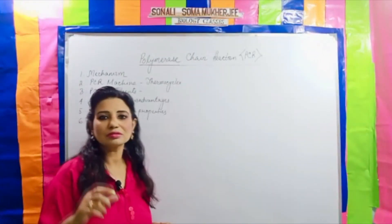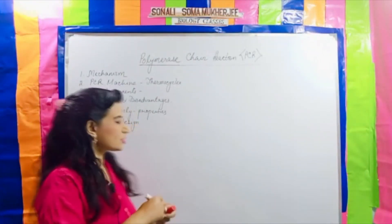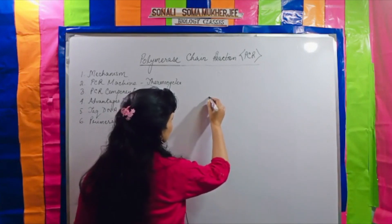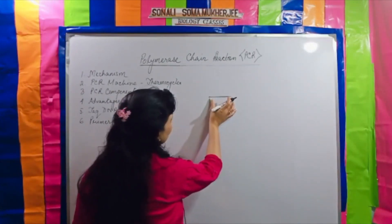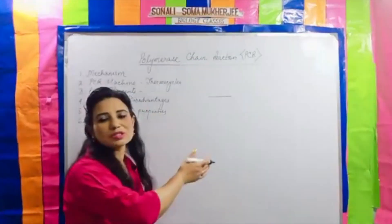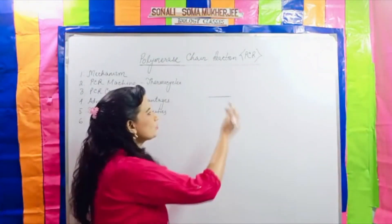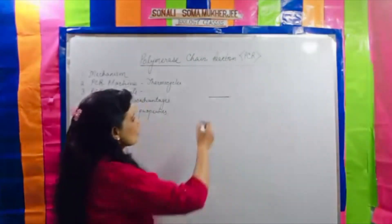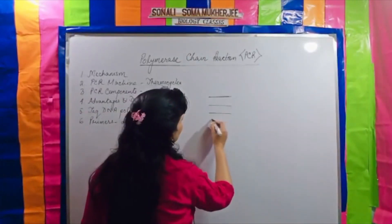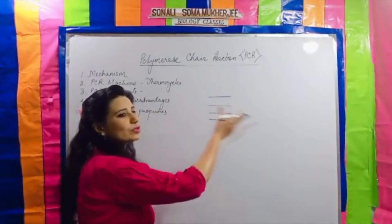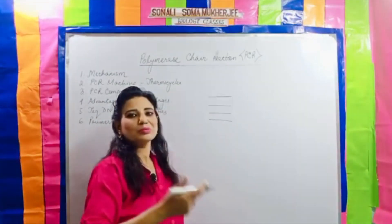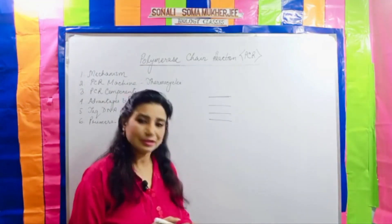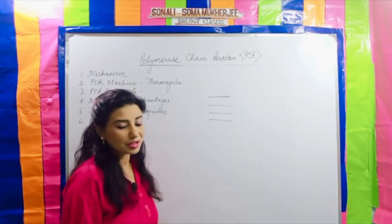Amplification of the gene is very important. If we have a very small gene fragment and do not make multiple copies of it, we will not be able to study it. That is why the amplification process takes place — to get multiple copies. In the first step only two copies are made, then one strand acts as a template and further copies can be made. It is like a xerox machine.